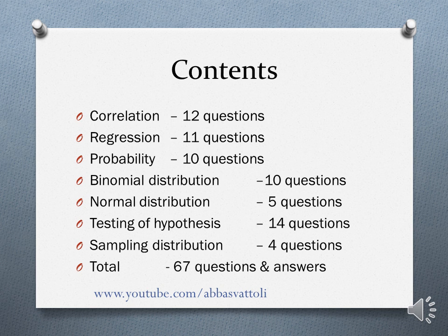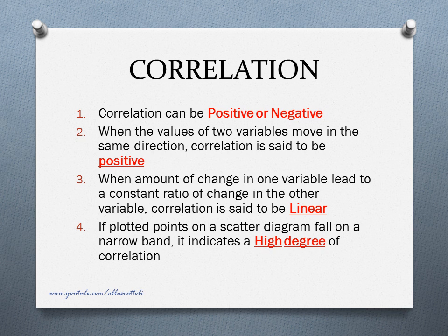14 questions from testing of hypothesis and 4 questions from sampling distribution. First, correlation. Correlation can be positive or negative. When the values of two variables move in the same direction, correlation is said to be positive. Likewise, when the values of two variables move in the opposite direction, correlation is said to be negative. When the amount of change in one variable leads to a constant ratio of change in the other variable, correlation is said to be linear.